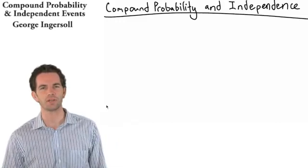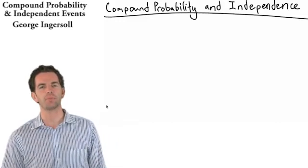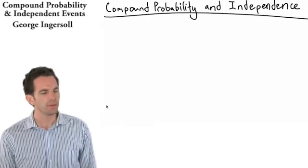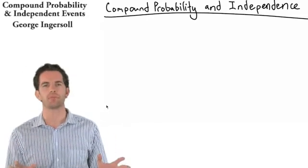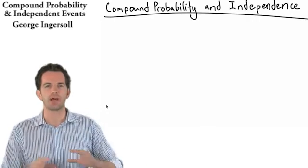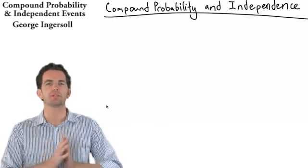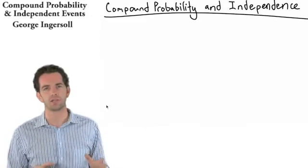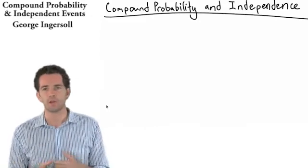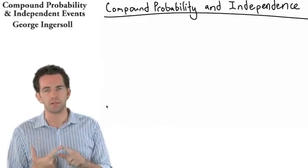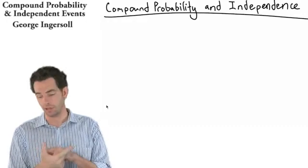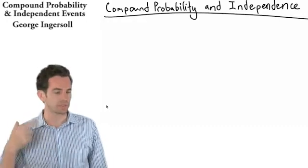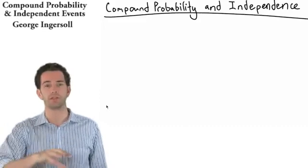In this video we're going to talk about compound probability and independent events. Let's begin by defining compound probability. This is a fairly simple concept — compound probability just means there are multiple events, and we're trying to find the intersection of those events. If we've got two events, A and B, we're trying to find the probability of A occurring and B occurring. That's the intersection — what's the probability of both events occurring?